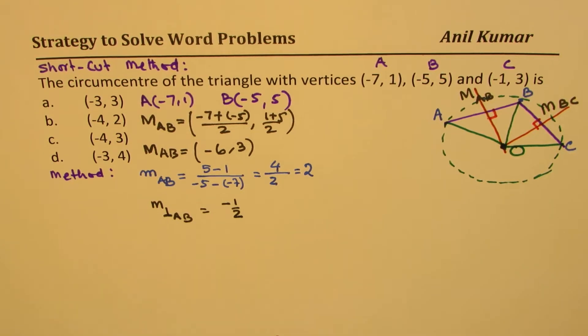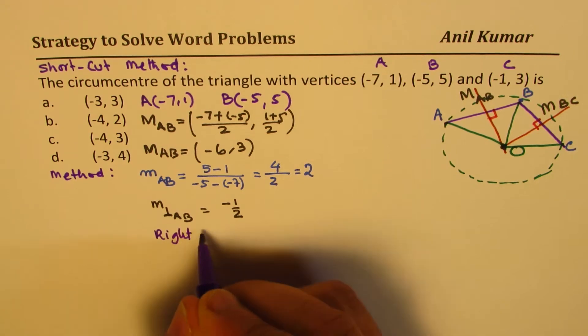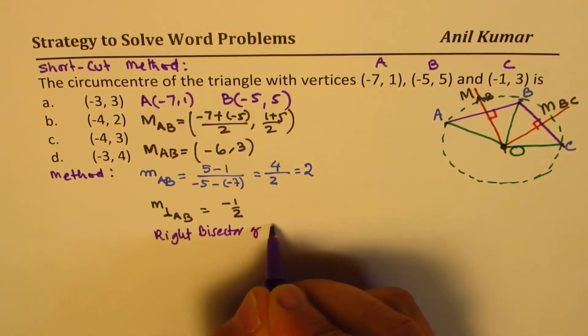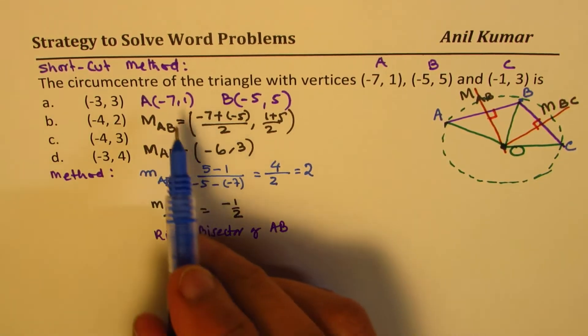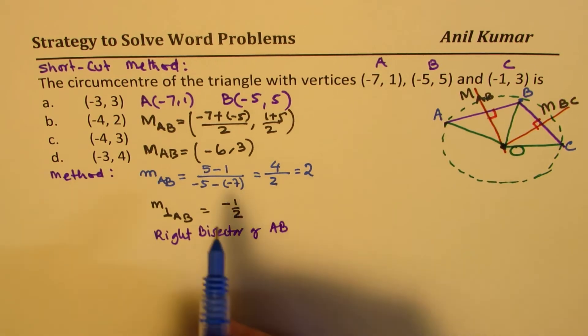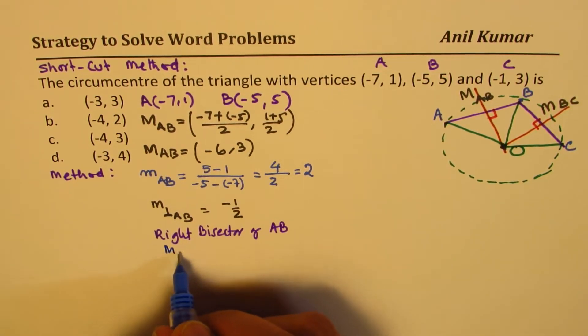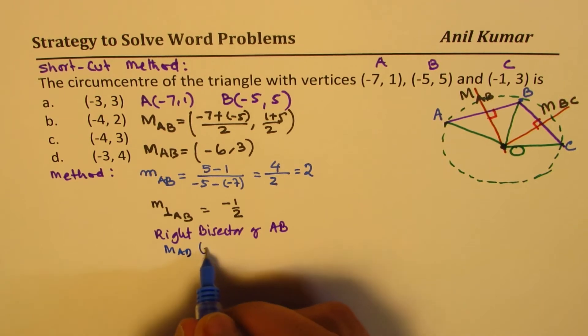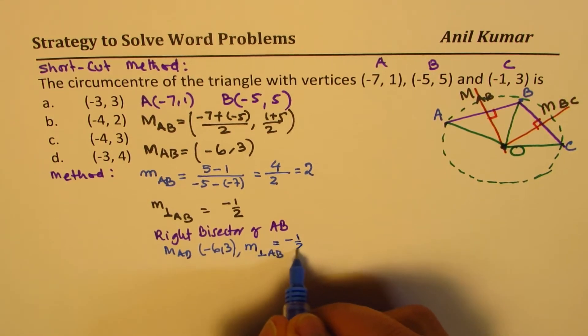So now we can now write down the equation of right bisector of AB. So it has to go through the point, which is the midpoint, which is basically (-6,3).